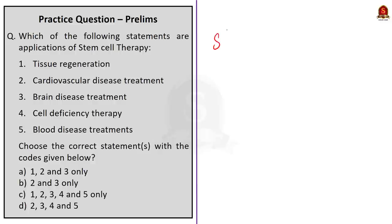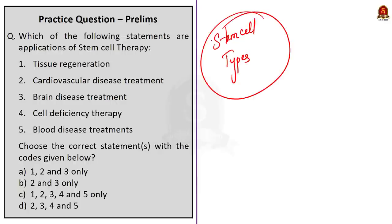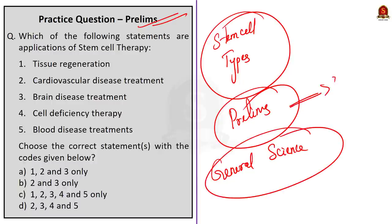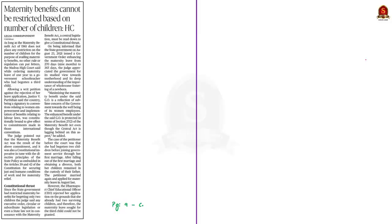We discussed what a stem cell is and the types of stem cells. You can expect some preliminary questions under these topics as they come under general science, which is in the preliminary syllabus. Now let's move on to the next news article, which talks about a writ petition against a rejection of a maternity leave application of a woman.